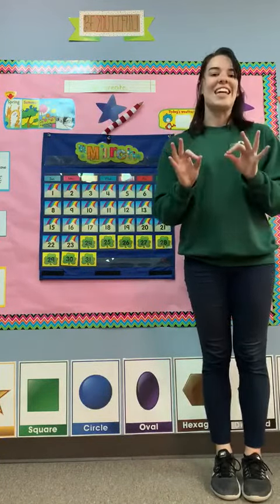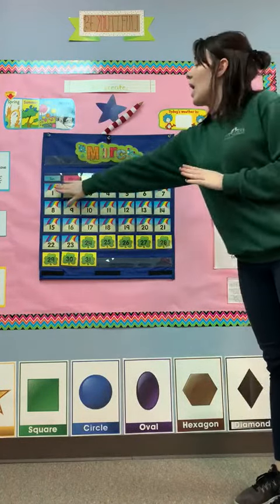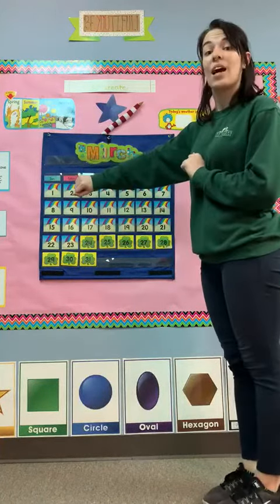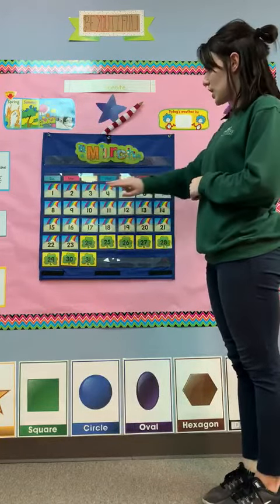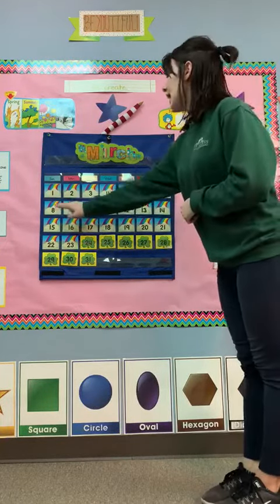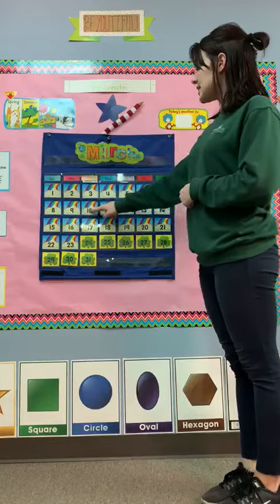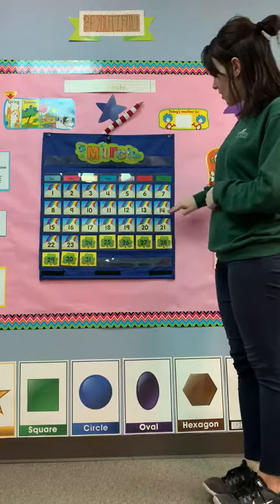Let's figure out what our date is. So, let's go ahead and start counting at one. I want you guys to count with me at home, okay? 1, 2, 3, 4, 5, 6, 7, 8, 9, 10, 11, 12, 13, 14,